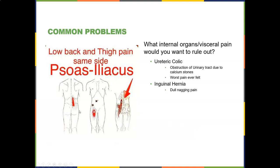The iliopsoas can refer pain to the mid-thigh or low back. Trigger points in the psoas major are a big culprit in musculoskeletal and low back pain, especially in athletes who run a lot. You'd also want to rule out ureteric colic — obstruction of the urinary tract due to calcium (kidney) stones — which people describe as the worst pain they've ever felt, sometimes worse than childbirth.